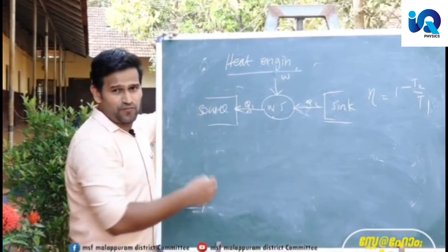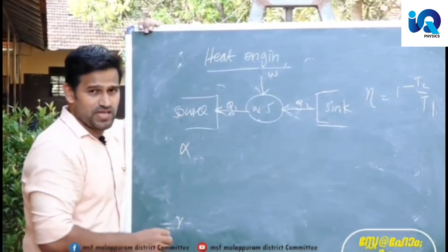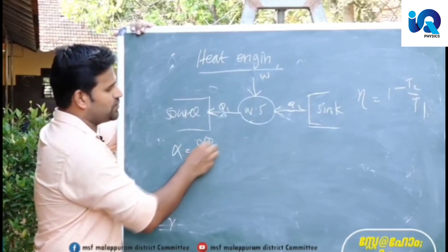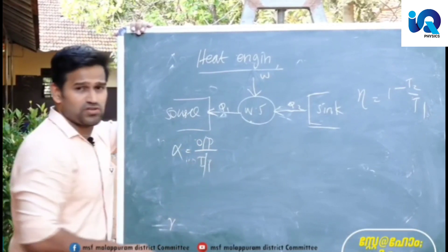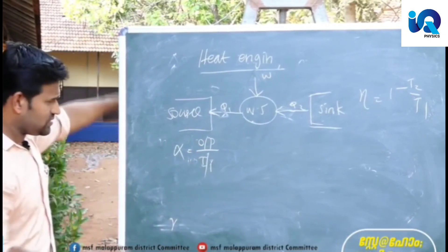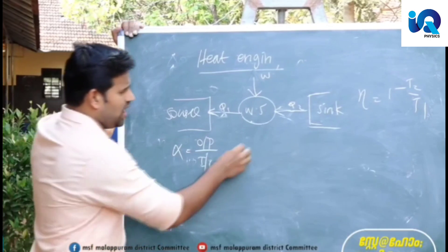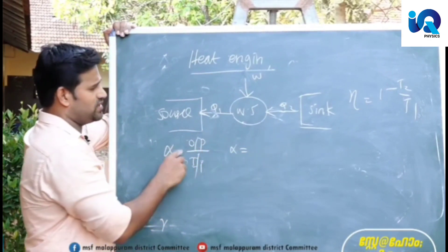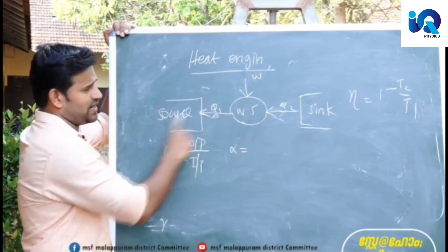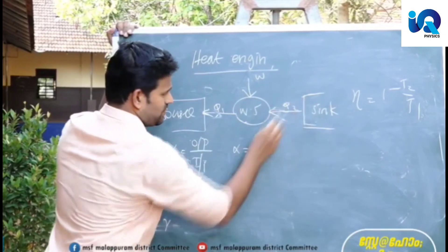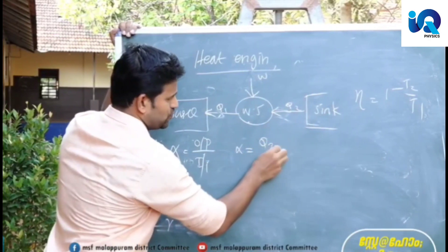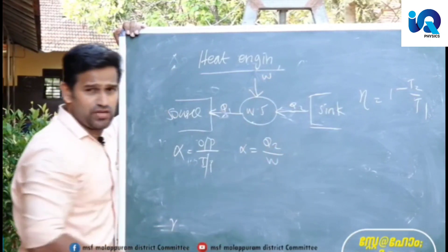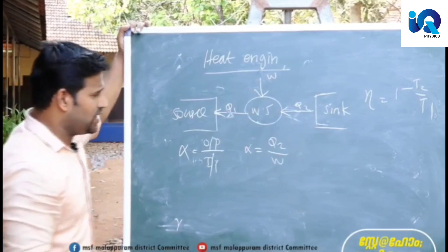Coefficient of performance. Alpha equals output by input. Output by input. The output is Q2. Input is mechanical work W. So alpha equals Q2 by W.